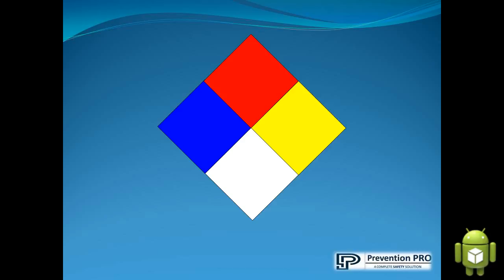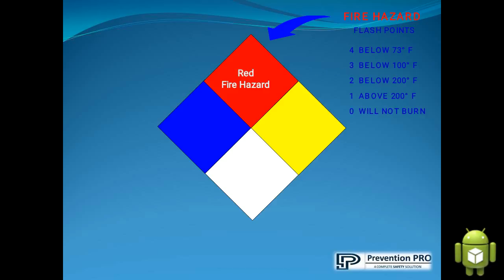Now we are going to see what the red color represents. Red color represents fire hazards. If the red box has the number 0, it says that the flammable inside the container will not burn. If the number is 1, it will burn above 200°F. If the number is 2, it will burn below 200°F. If the number is 3, it will catch fire below 100°F. And if the number is 4, it will catch fire below 73°F. These are the flash points of the flammables.